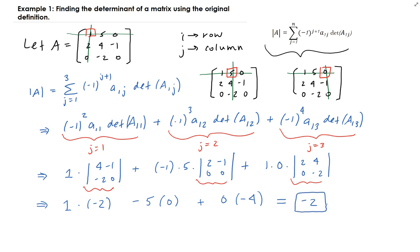So minus 2 is the determinant of matrix A. This is a really nice formula. It was later discovered that, along with some other mathematicians, Cramer showed you could actually use the same approach for any column or any row, and I'm going to illustrate that on the next example.